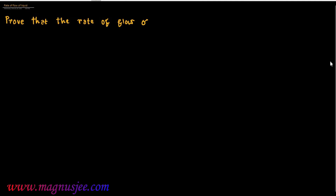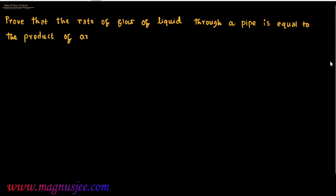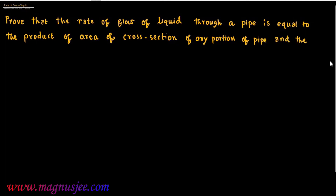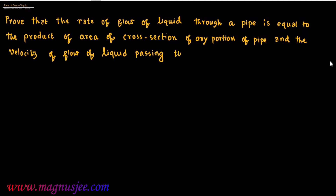The rate of flow of liquid to a pipe is equal to the product of the area of cross-section of any portion of the pipe and the velocity of flow of liquid passing through that portion.